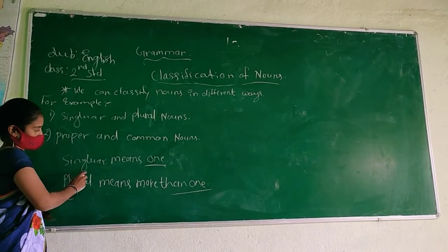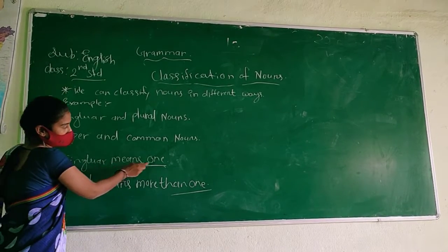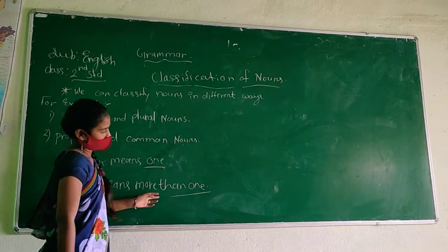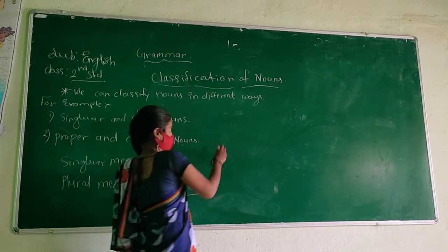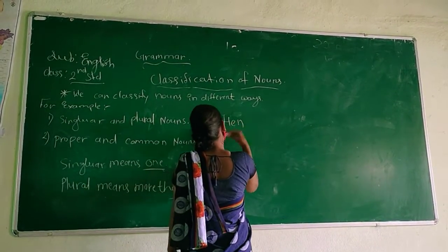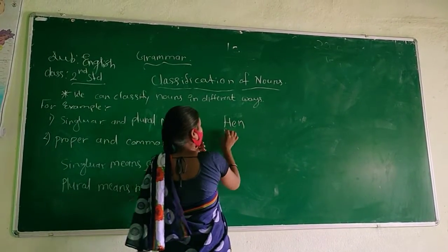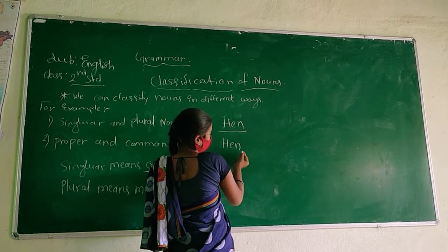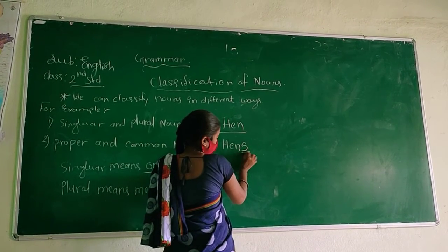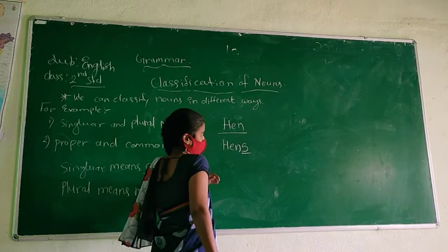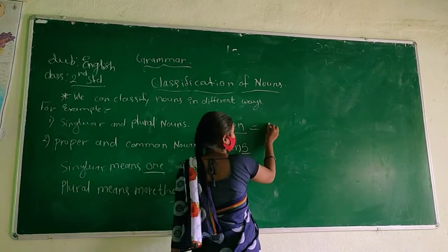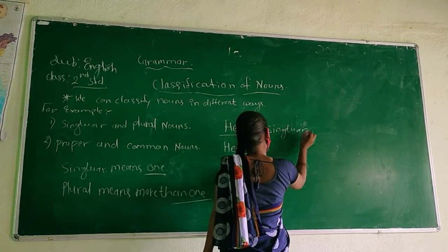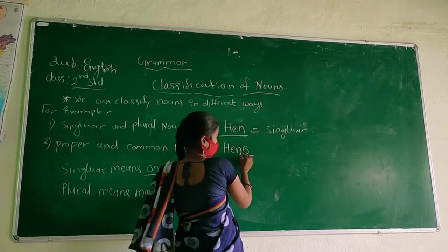Singular nouns means what? Singular means one and plural means more than one. For example, h-e-n, hand. There is no sign 's', so this is singular. And this is plural.